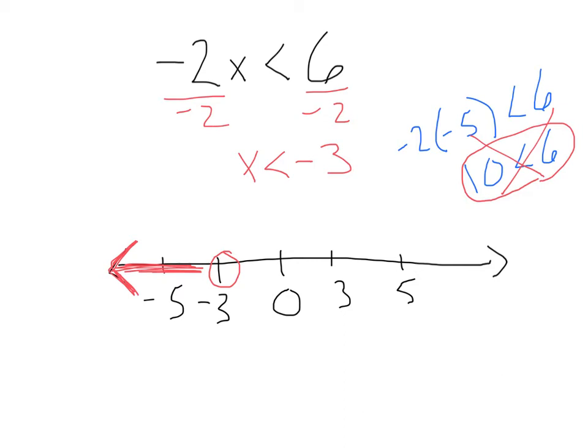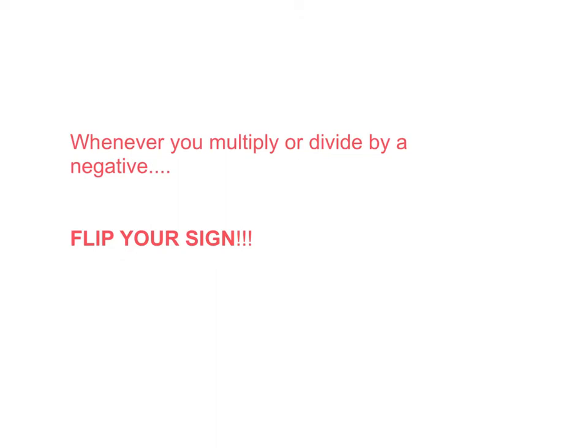Now because the nature of inequality is when you multiply or divide by a negative, you have to flip your sign. That is super important. I'm going to say it one more time. You write it down. Put it on your fridge so you don't forget. Whenever you multiply or divide by a negative, flip your sign.